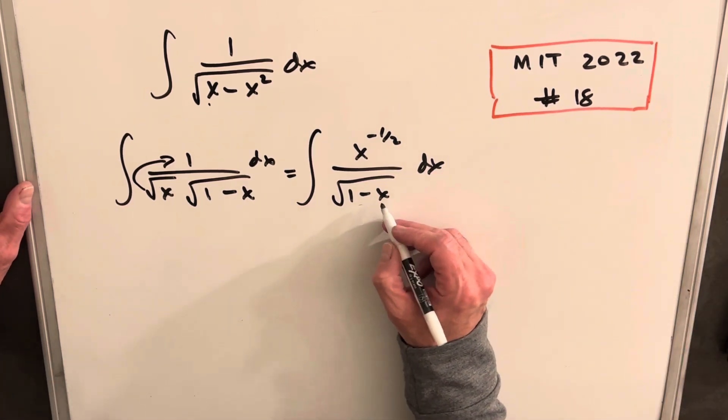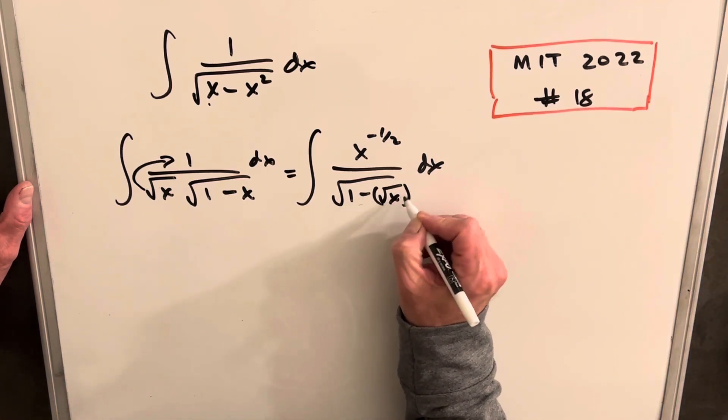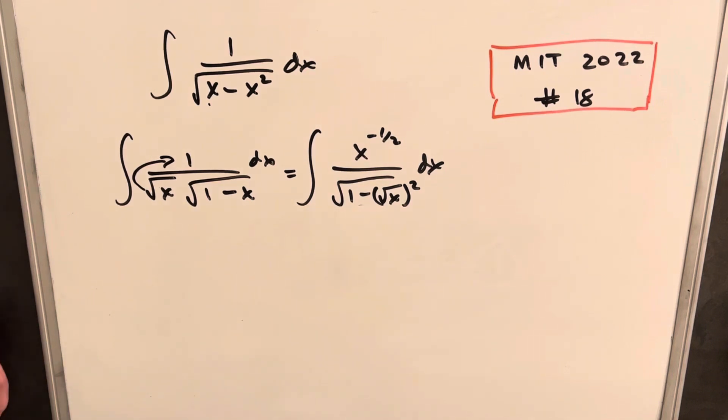So what we can do is we can kind of invent that by just rewriting this like so. We can write it as square root of x squared. And I think that's going to work out much better.